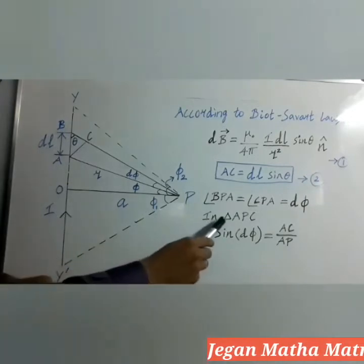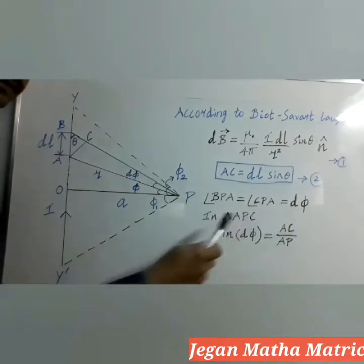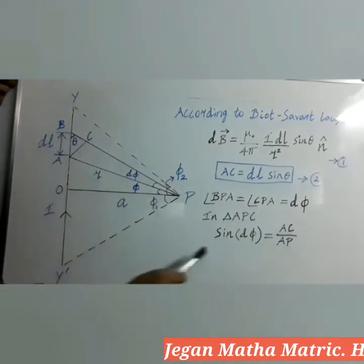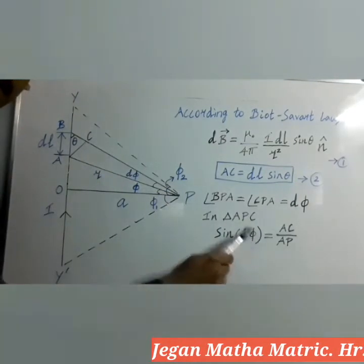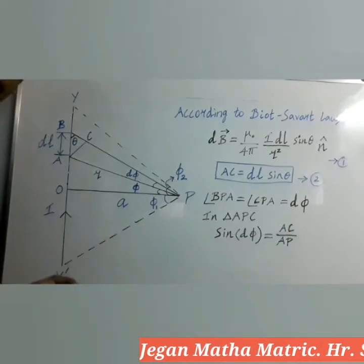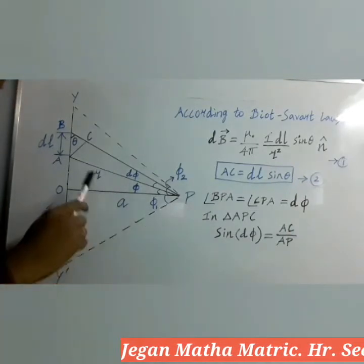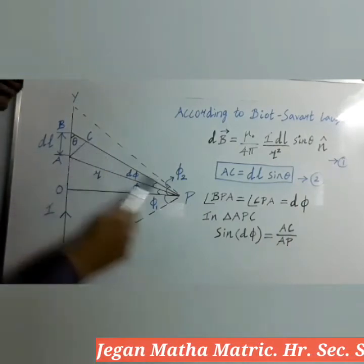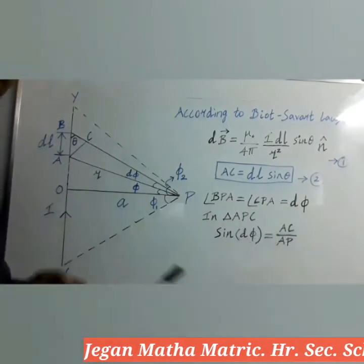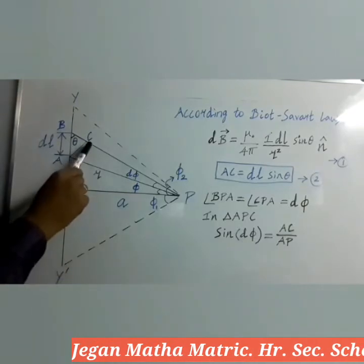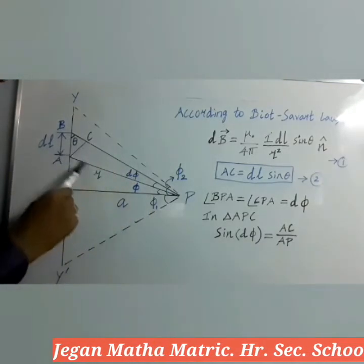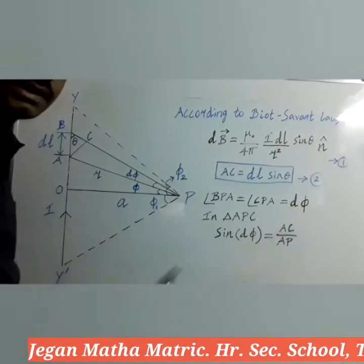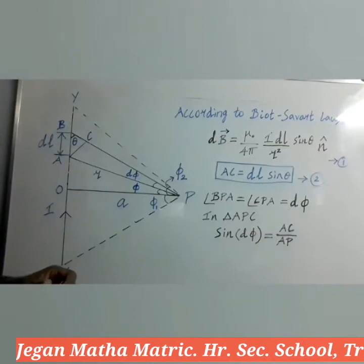Now I am going to take triangle APC. In triangle APC, what is the sine dΦ value? The formula for sinθ is opposite side by hypotenuse. The opposite side to dΦ is AC, and since C is 90 degrees, the hypotenuse is AP. So sinθ = AC by AP, and I have written AC by AP.